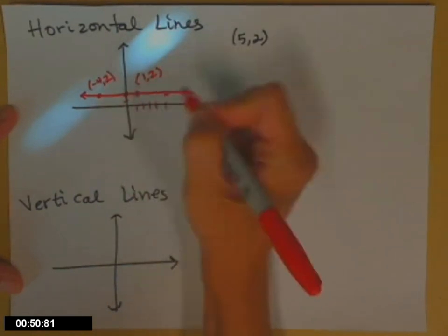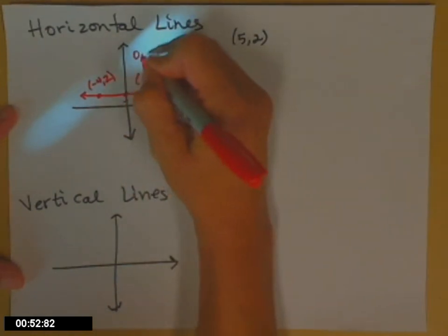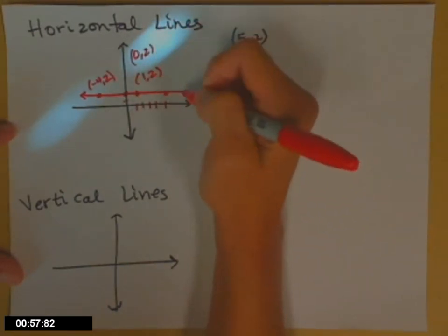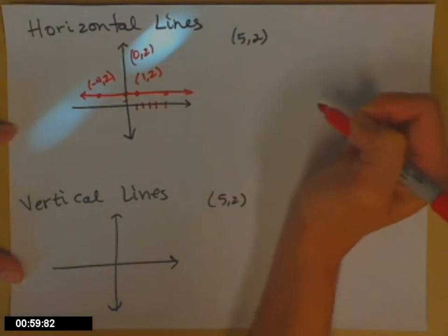And what's that y-intercept there? Oh, yeah, that's (0, 2). So what I want you to notice is that regardless of what x is, on that horizontal line, all of the y values are equal to 2.